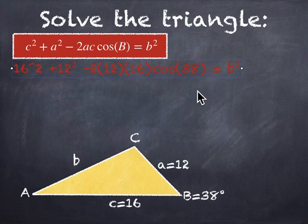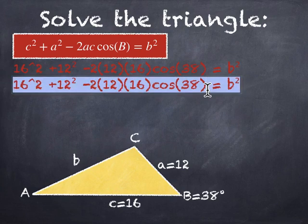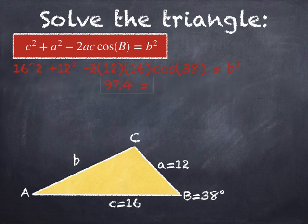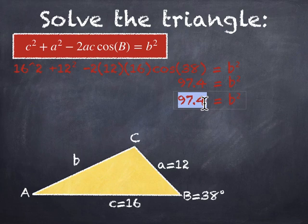Let's put in the information we know. Side c is 16, side a is 12, and we subtract 2 times side a times side c times the cosine of angle B, which is 38 degrees, and that equals b squared. That entire left-hand side is just a number. Typing it into the calculator: 16 squared plus 12 squared minus 2 times 12 times 16 times the cosine of 38 gives about 97.4. So 97.4 equals b squared.